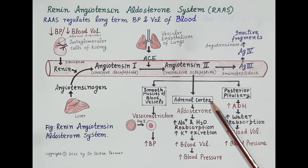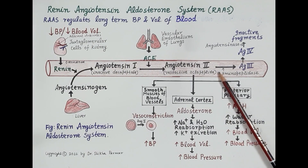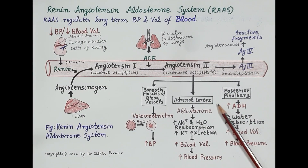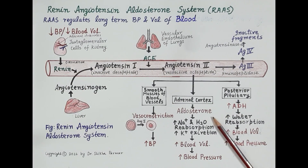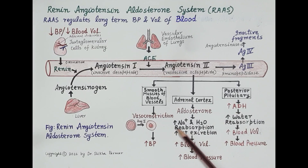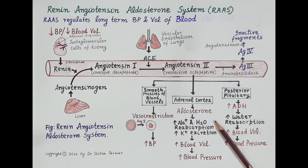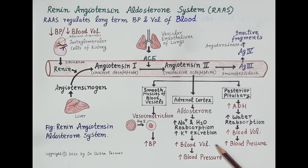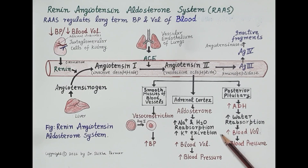In addition, Angiotensin 2 also stimulates the adrenal cortex to increase secretion of aldosterone. Aldosterone is a hormone that increases reabsorption of sodium and water in the distal convoluted tubules of the kidney. This reabsorption of water increases blood volume. Aldosterone also causes increased excretion of potassium. The increase in blood volume in turn increases blood pressure.